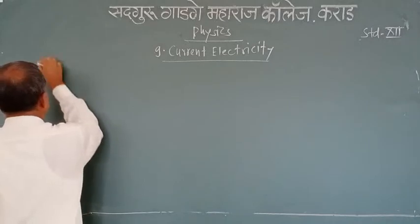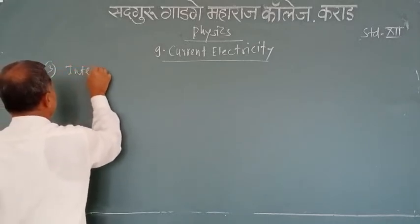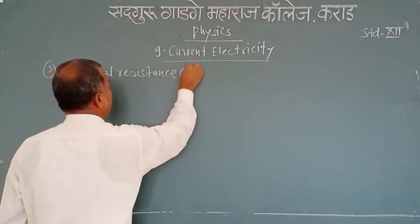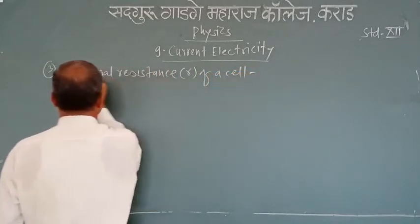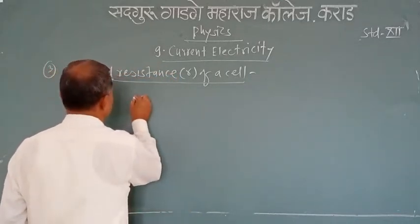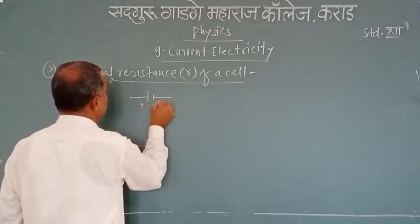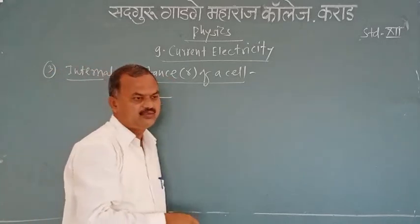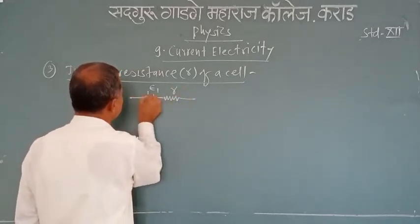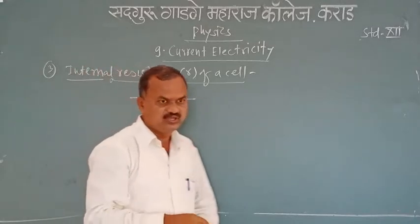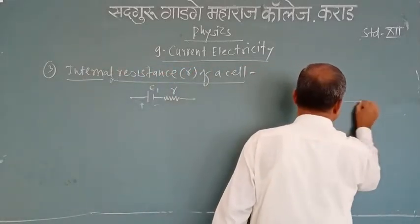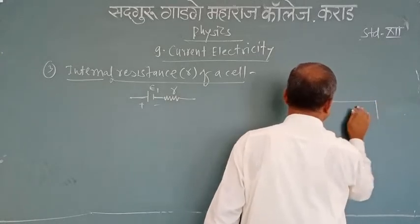The third use of the potentiometer is to determine the internal resistance of a given cell. We have a cell with two plates, positive and negative, and EMF E1. Suppose its internal resistance is r (small r). To calculate that resistance, we use the potentiometer.